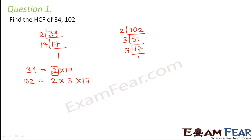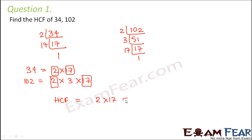Now let us mark the common factors we have. 2 is common in both, and 17 is also present in both. So 2 and 17 are the common factors. We will multiply the common factors, that is 2 into 17. This entire package is common in both, so the HCF of 34 and 102 is 34.